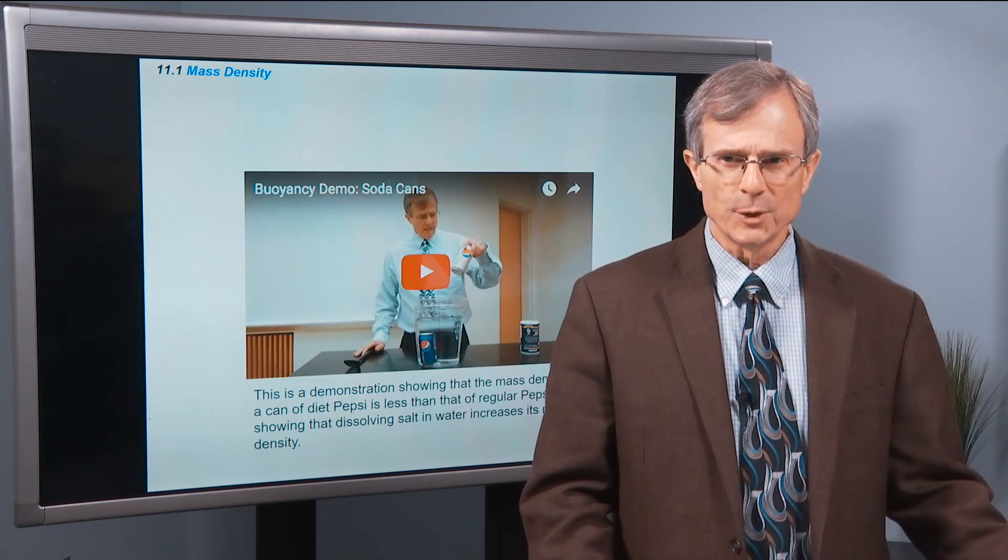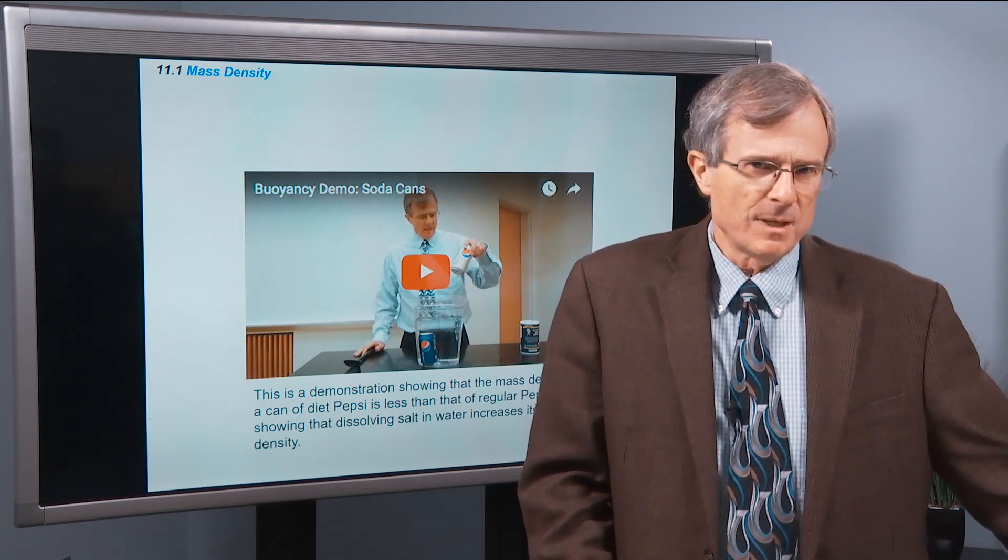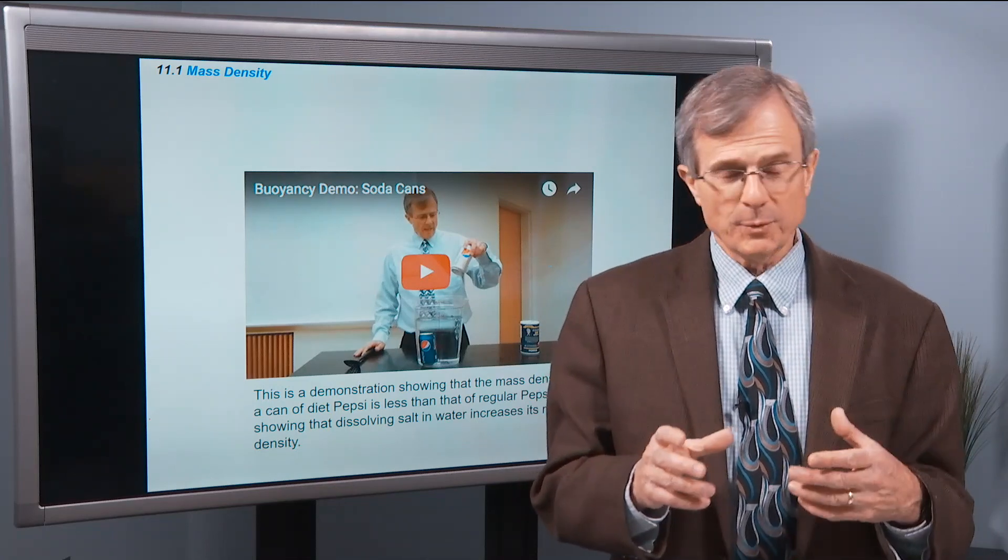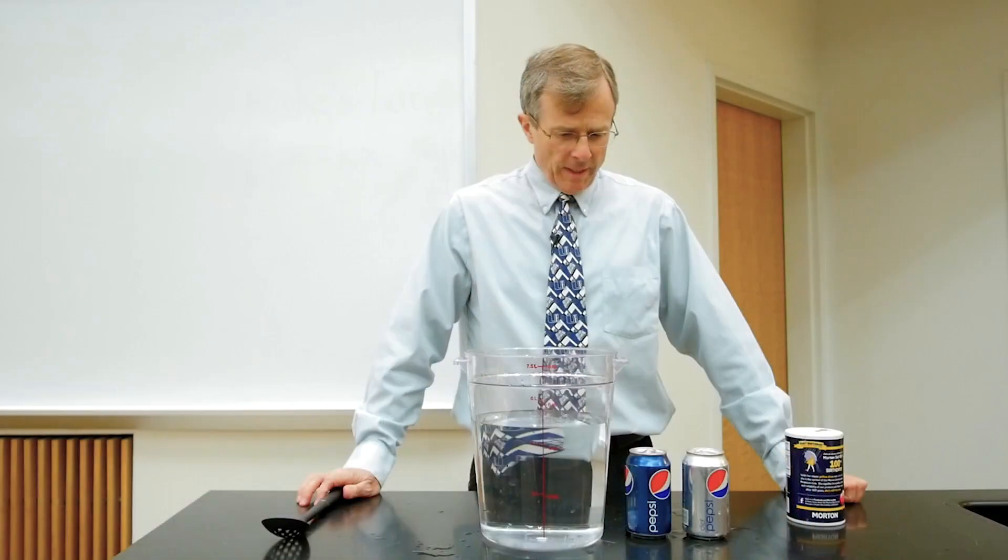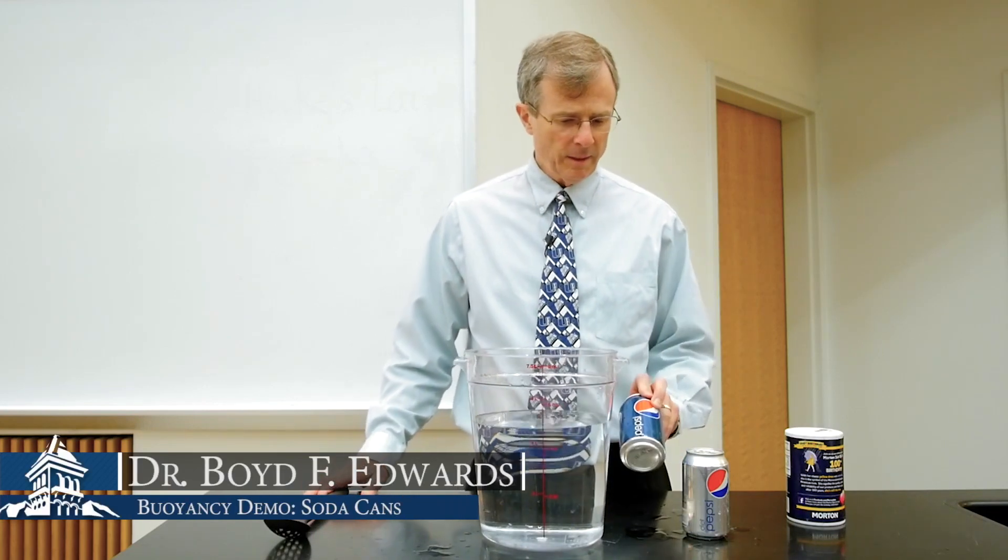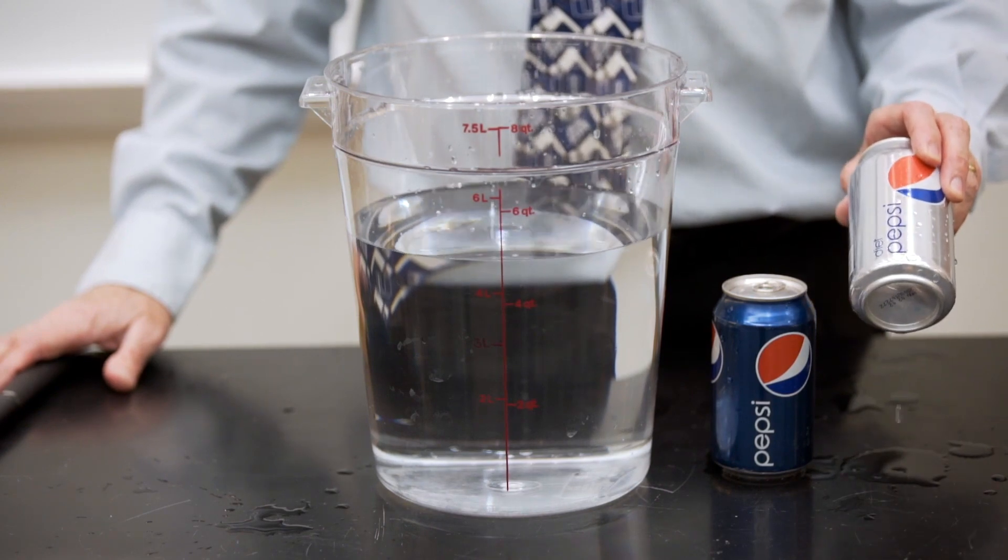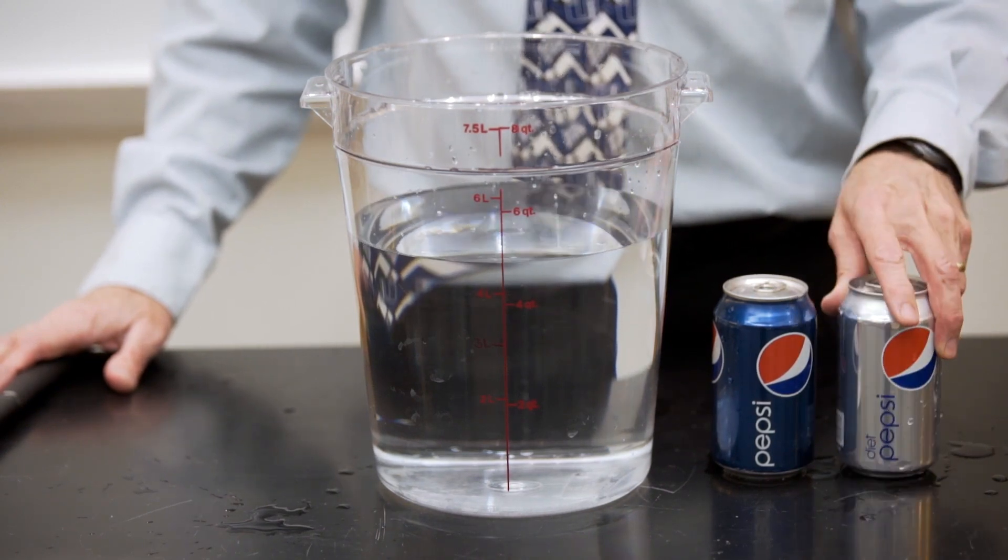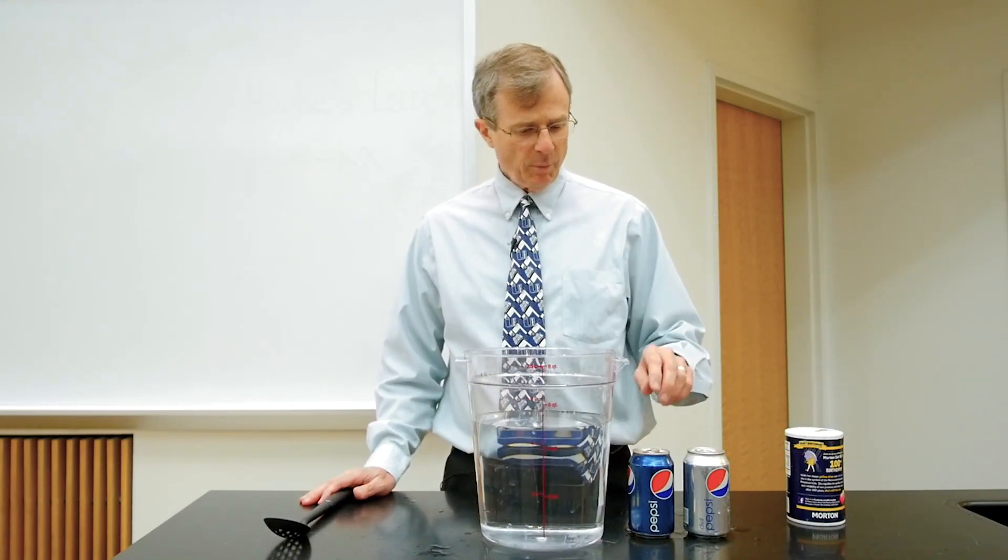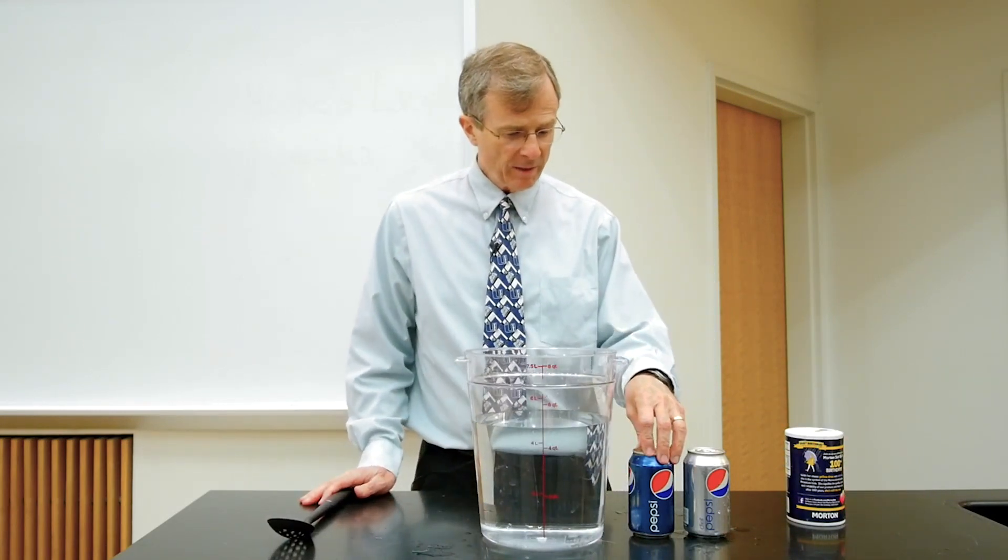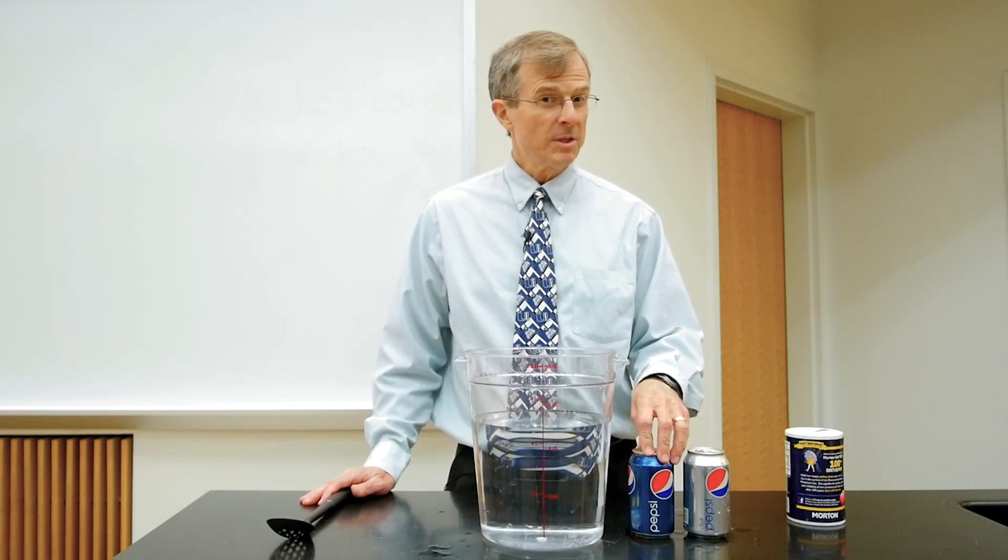So first demonstration of mass density showing the difference in density between Diet Pepsi and regular Pepsi. I've got here a can of regular Pepsi, can of Diet Pepsi, silver colored. Both of them are 12 fluid ounces, but apparently the densities of these two liquids are slightly different.